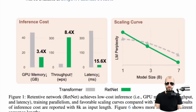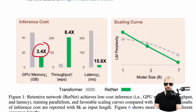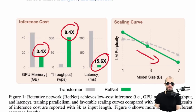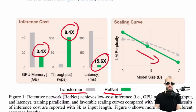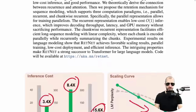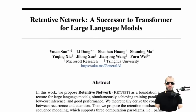Hold on to your horses because we have a new contender in town. It uses less GPU memory, it has a higher throughput, it has a lower latency, and it scales better than transformers. This is RetNet — the new chad. Compare this to the measly old transformer. It's better in every way. And that's what we're going to look at today: retentive networks.